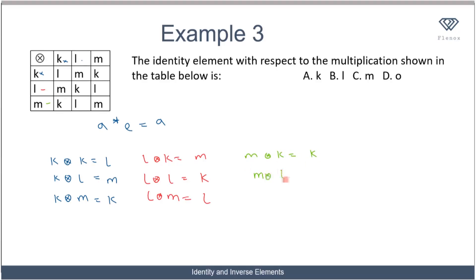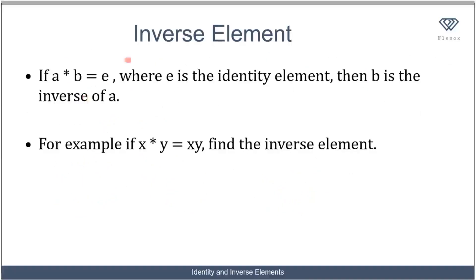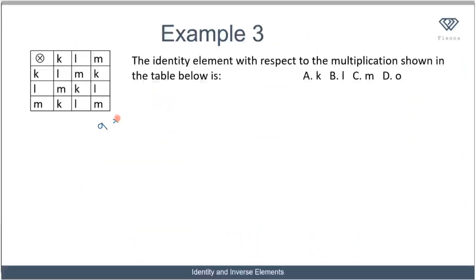Here is another example where we'll use a multiplication table — this is an actual JAM past question. We are told to find the identity element with respect to the multiplication shown in the table below. Let's write out our formula for the identity element: a★e equals a.